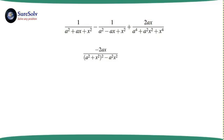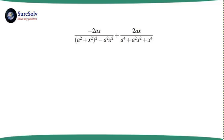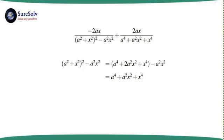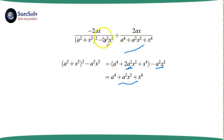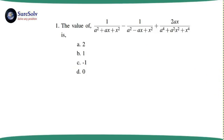In the numerator the a² + x² terms are cancelled out, but minus 2x remains. This is the simplified result of the first two terms combined. The three-term expression is then transformed into a two-term expression where the numerators are the same but with opposite signs, and the denominators also turn out to be exactly the same. So these two terms cancel each other out and the result is zero. Option D, zero, is the answer.